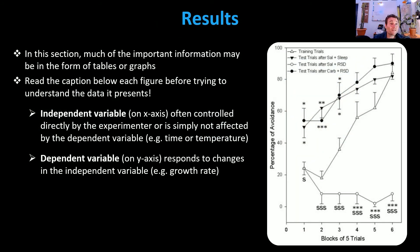Once you get done with the methods section, you move on to results, where tables and graphs are the stars of the show — that's where all the big important information is contained. Make sure you read the captions below your figures before trying to understand them, because if you jump straight in you might think it's saying one thing, then read the caption and realize it was saying something very different. The figure I selected is straightforward: it shows the different groups of rats and their performance across trials over time.